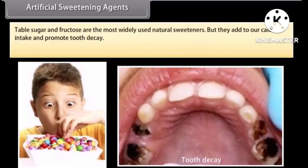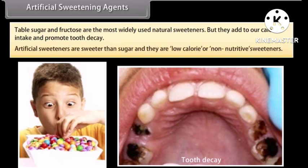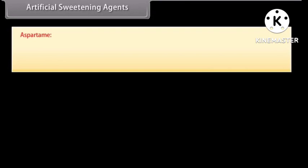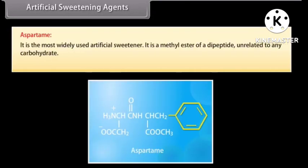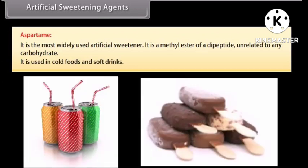Artificial sweetening agents: sweetness is a matter of taste, but almost everyone has a craving for sweets. Table sugar and fructose are the most widely used natural sweeteners, but they add to our calorie intake and promote tooth decay. Artificial sweeteners are sweeter than sugar and they are low-calorie or non-nutritive sweeteners. Aspartame is the most widely used artificial sweetener — it is a methyl ester of a dipeptide, unrelated to any carbohydrate, and is used in cold foods and soft drinks.